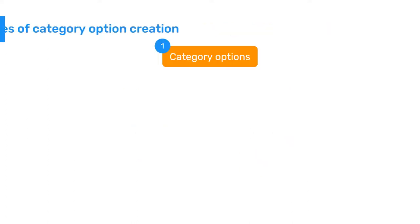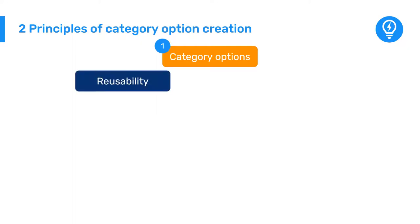There are two critical principles associated with category options. First, reusability. We don't want any category option to be created more than once in a given DHIS2 system. If it already exists, we should reuse it.